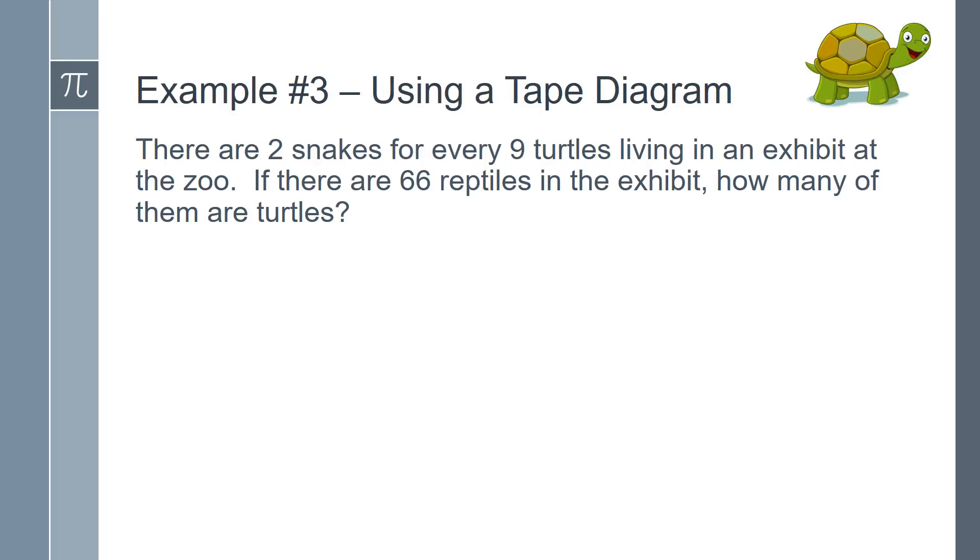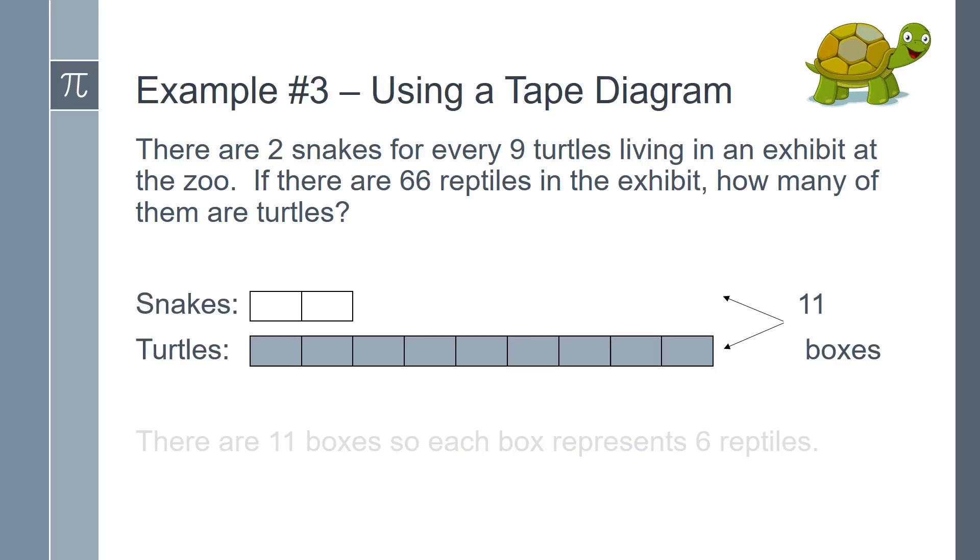We will start by drawing a tape diagram with 2 boxes representing the snakes and 9 boxes representing the turtles for a total of 11 boxes. There are 66 reptiles, represented by the 11 boxes, so each box represents 6 reptiles.